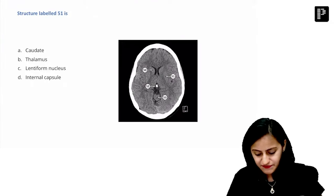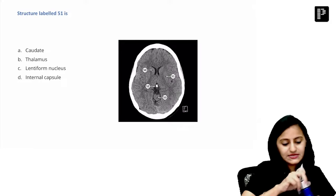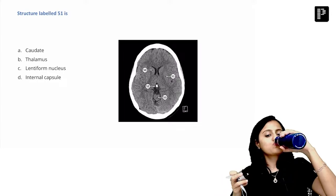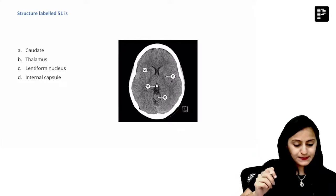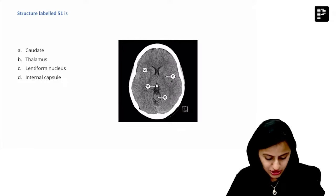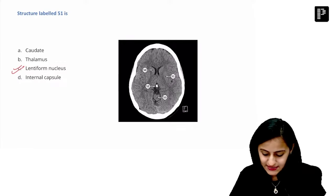Right, next one. What is the structure labeled 51 here? Caudate, thalamus, lentiform, or internal capsule? Structure labeled 51. Someone is saying caudate or someone of you saying lentiform.